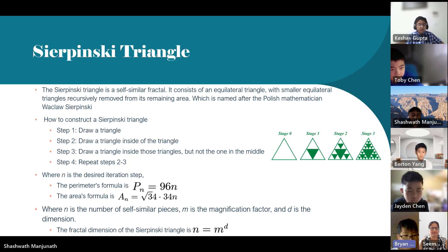Where N is the desired iteration step, the perimeter's formula is 96N. The area's formula is square root 34 times 34N. Where N is the number of self-similar pieces, M is the magnification factor, and D is the dimension. The fractal dimension of the Sierpinski Triangle is D equals M to D power.